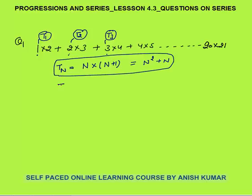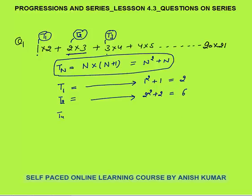We can verify this. The first term: n=1 gives 1² + 1 = 2, which equals 1×2. The second term: 2² + 2 = 6, which equals 2×3. For the fourth term: 4² + 4 = 20, matching the series. So the nth term is confirmed as n² + n.